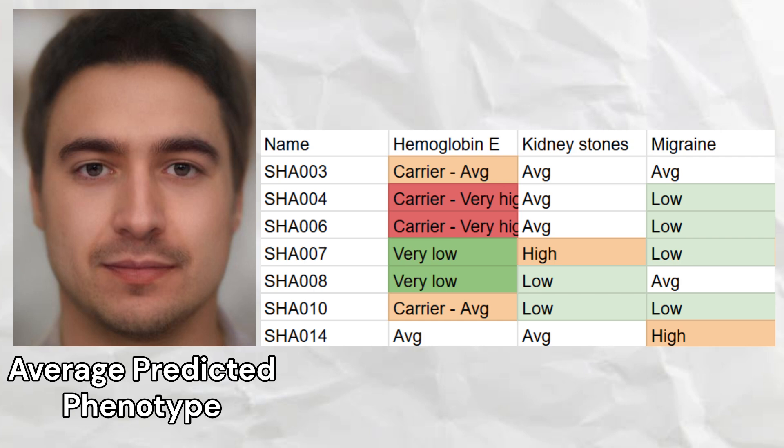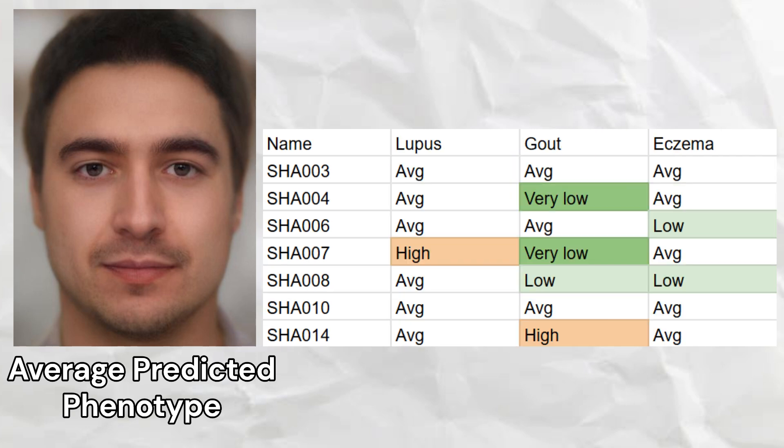Four of the seven samples carried risk variants for hemoglobin E disease. One sample had high odds of kidney stones, and most samples had a low predisposition to migraine. One sample had a high predisposition to lupus, three samples had a low predisposition, and one sample had a high predisposition to gout, while two samples had a low predisposition to eczema.